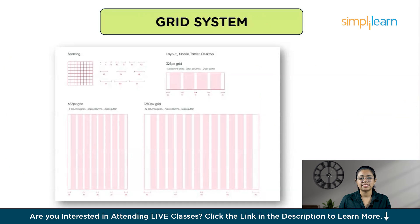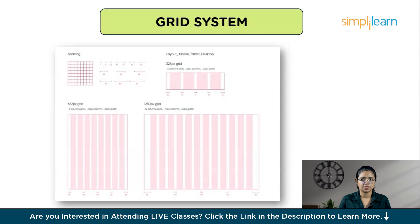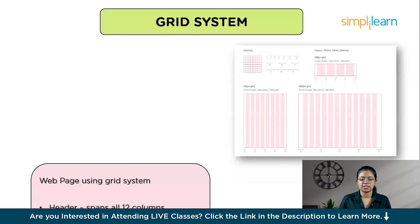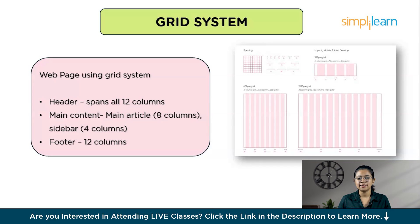A grid system in layout design is like a blueprint for placing elements on a page or screen. A grid divides a page into columns and rows, helping designers organize content in a clean, consistent, and structured way. The key elements of a grid system are columns, rows, gutters (spaces between columns), and margins (space around the edge of a layout). For example, imagine designing a web page with a header, main content area, and footer. The header spans all 12 columns; the main content divides into 8 columns for the main article and 4 columns for a sidebar; and the footer also spans 12 columns. Using a grid system ensures each section is aligned neatly with consistent spacing.